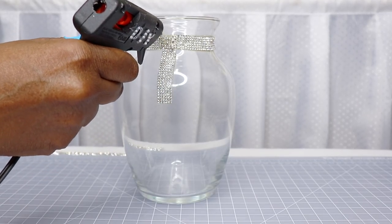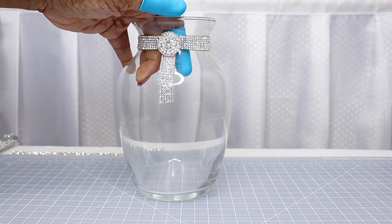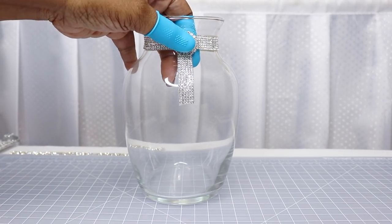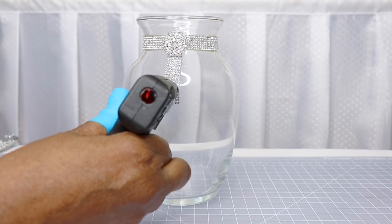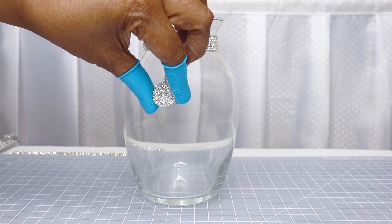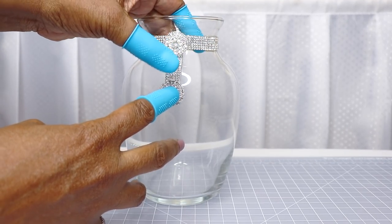Now I'm going to apply that round embellishment that I used earlier at the top of the wrap, and I'm also going to apply another one at the bottom of the wrap because it's kind of cut unevenly so I want to hide that.